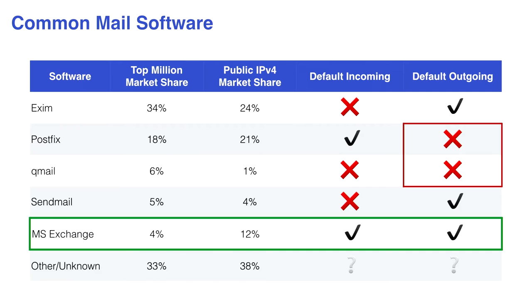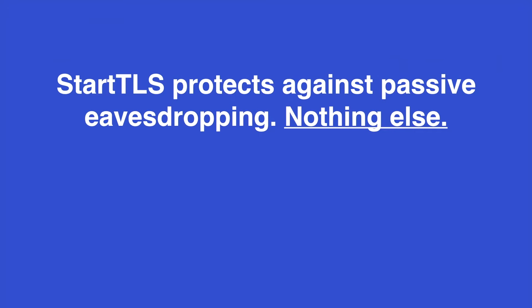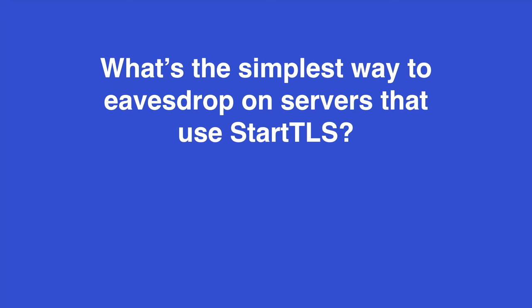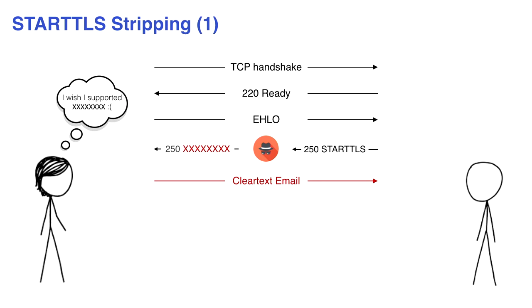At the end of the day, STARTTLS is protecting against passive eavesdropping but protects against nothing else — it does not protect against any sort of active attacks. If I'm an active attacker and want to disable STARTTLS, the easiest stateless way is to watch for SMTP connections, see the STARTTLS command, and just replace it with a bunch of gibberish. The server advertises STARTTLS but instead the client sees garbage, says 'I don't know what that is, I won't use it,' and then sends clear text mail.